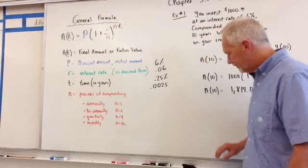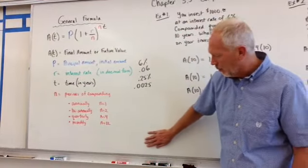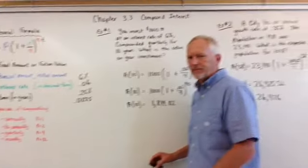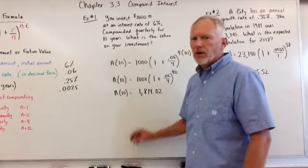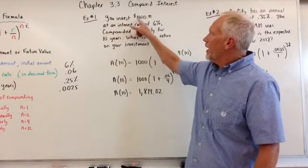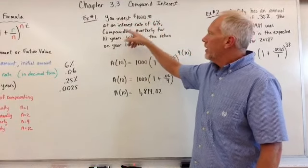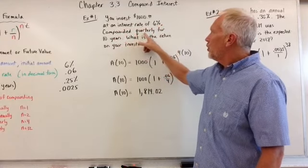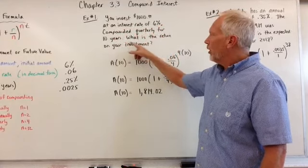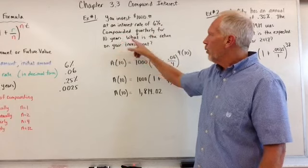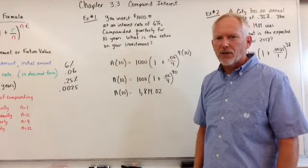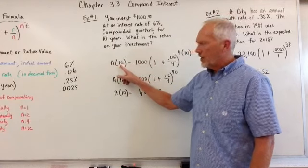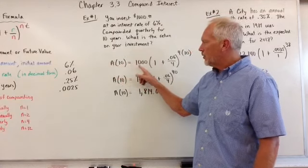Number one. So here we have number one. So we have you invest a thousand dollars at an interest rate of six percent compounded quarterly for 10 years. What is the return on your investment? So let's look.